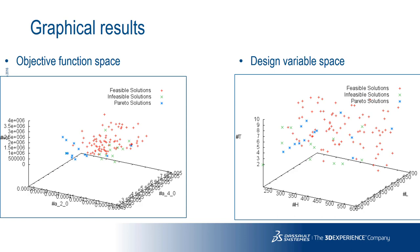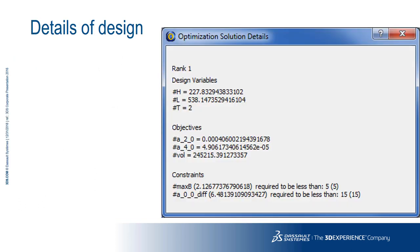Here we see the results of the optimization process. On the left is the objective function space: the vertical axis is the volume of the plate, and the horizontal plane maps out the second and fourth order harmonics. In that three-dimensional space, the blue crosses represent the Pareto optimal designs. Red signifies a feasible but not optimal design, and green are the infeasible designs that have failed one or both constraints. On the right we plot the design variable space — the vertical axis represents plate thickness, and the horizontal axis the length and height. You can see a cluster of Pareto optimal designs along a line representing a height of 250 to 300, since one goal is to minimize the volume of the plate. By clicking on any potential design in the optimization list, we can see the details of the parameters used, including the design variables of height, length, and thickness, as well as the objectives and constraints.